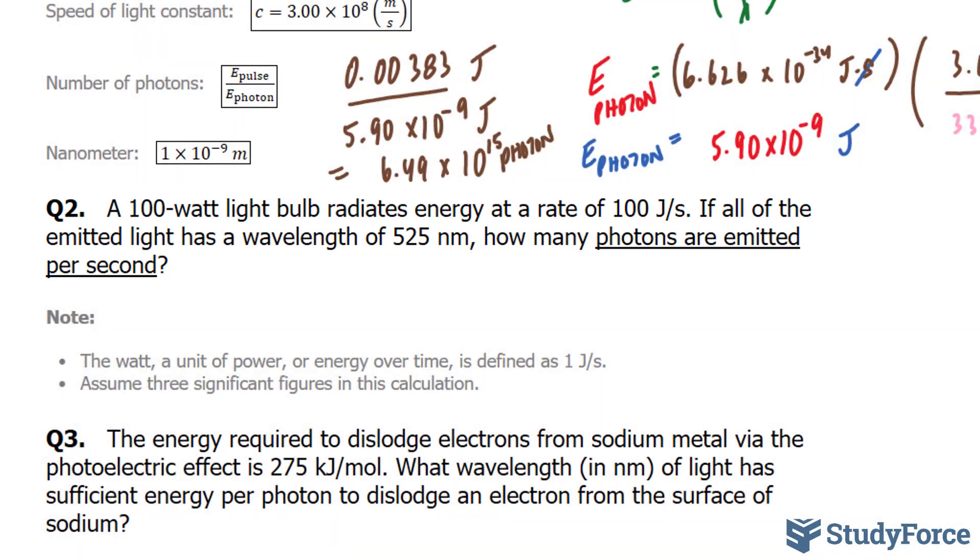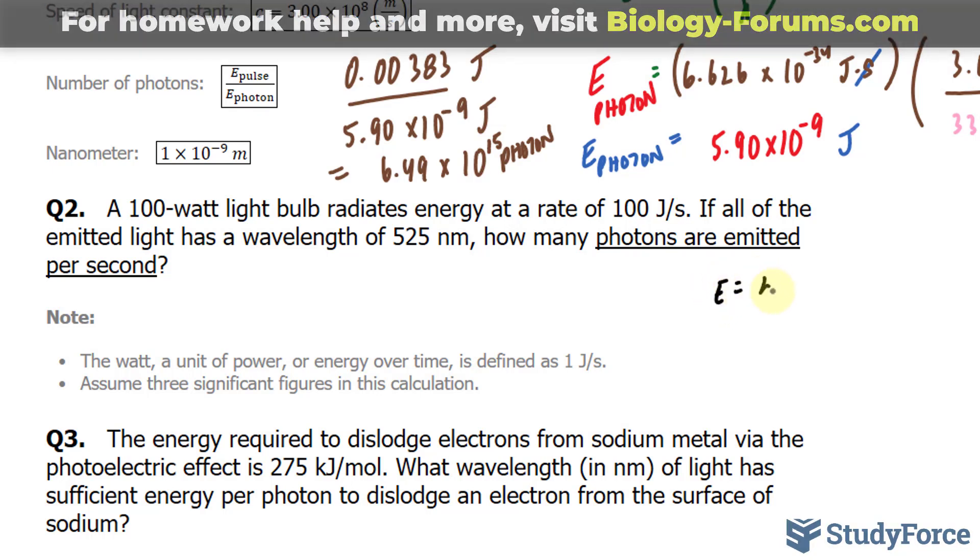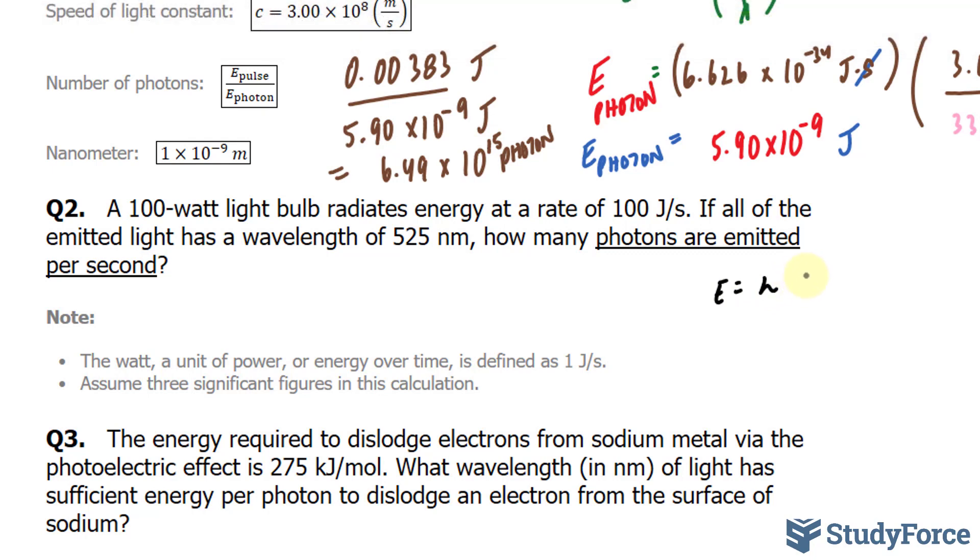The way I'll tackle this question is similar to the way I tackled question number 1. I'm going to find out how much energy per photon occurs for this particular wavelength. So let's go ahead and do that. We have E is equal to H times the frequency, which can be expanded to C over the wavelength, represented by lambda.